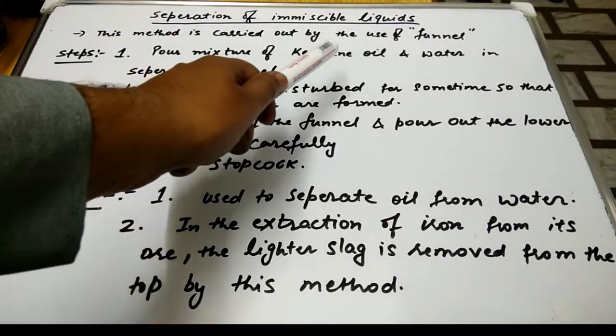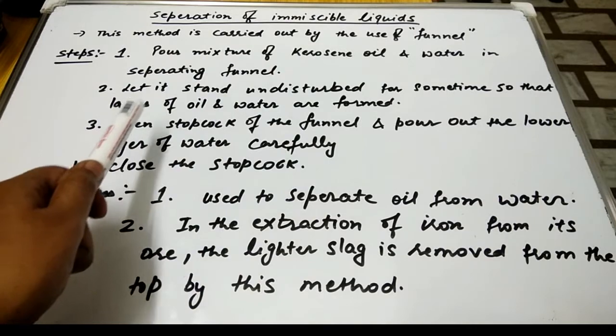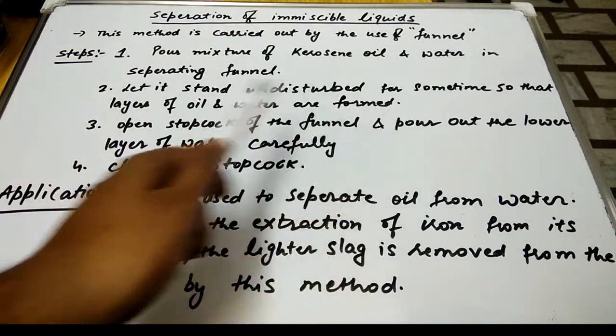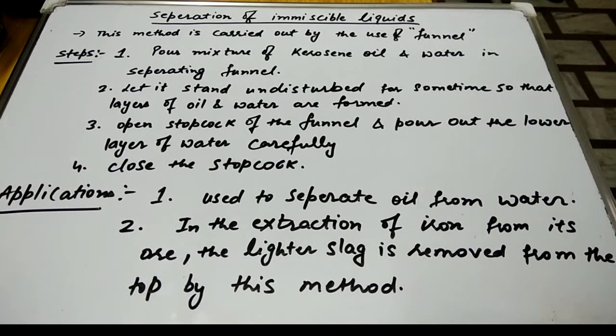Step 1: Pour mixture of kerosene oil and water in the separating funnel. Let it stand undisturbed for some time so that layers of the oil and water are formed.